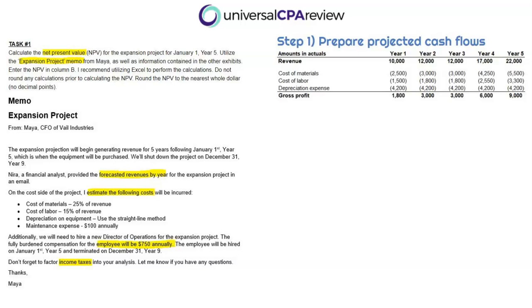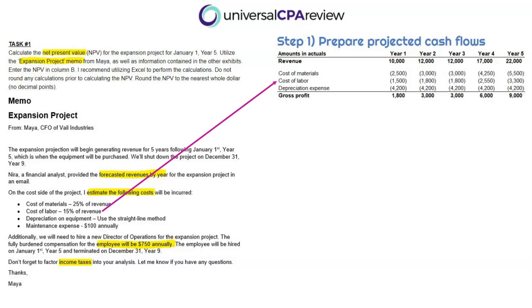Now we move to the cost side. I recommend using Excel for these calculations since they're not simple to do on pen and paper. For cost of materials, the driver is 25% of revenue — so for year one it's $2,500, and for year five it's $5,500. For cost of labor, it's the same idea, except it's 15% of revenue.